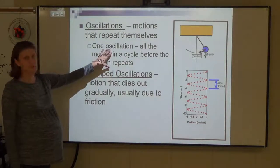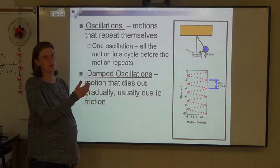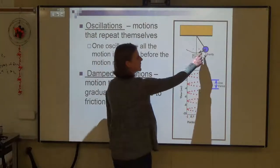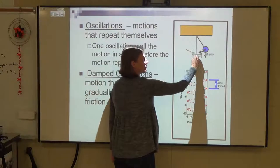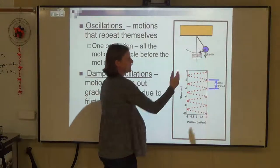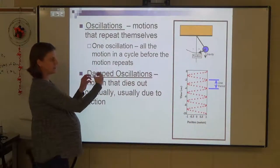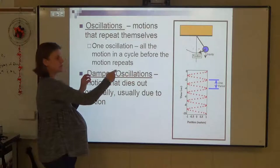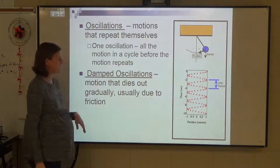One oscillation is just one full motion before the motion repeats itself. For a pendulum, if I start here, the pendulum swings this way and goes back to where it started — that would be one full oscillation. For a spring, we stretch it to the right, let it go, the spring snaps back left, goes back right — that's one full oscillation.